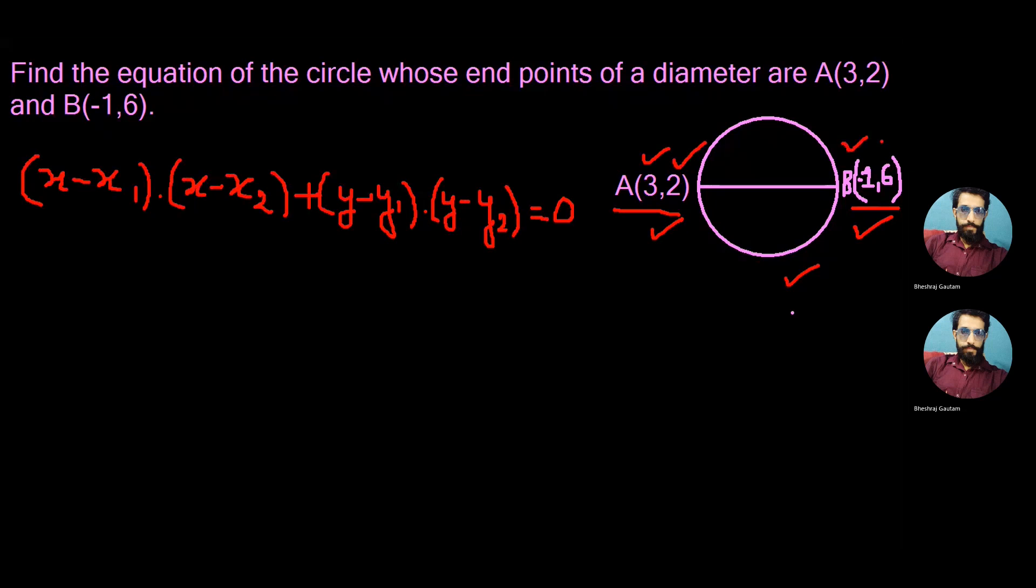...in the above equation we get (x-3) times (x+1) plus (y-2) times (y-6) equals 0. The minus from the formula and minus from -1 when multiplied give us plus, so we write plus 1 here in place of x₂.